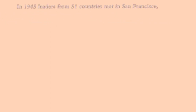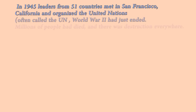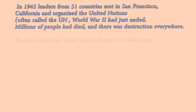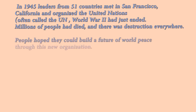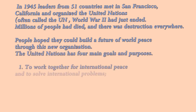In 1945, leaders from 51 countries met in San Francisco, California, and organized the United Nations, often called the U.N. World War II had just ended. Millions of people had died, and there was destruction everywhere. People hoped they could build a future of world peace through this new organization.